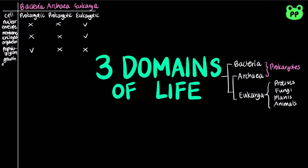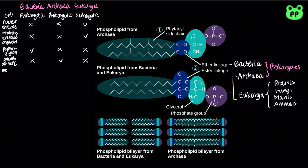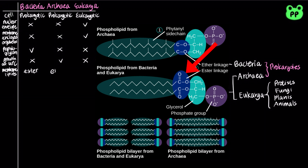Only certain archaea are found in extreme environments, such as high temperature. As a result, their membrane lipids contain ether linkages, which are more stable than the ester linkages found in the membrane lipids of bacteria and eukaryotes.